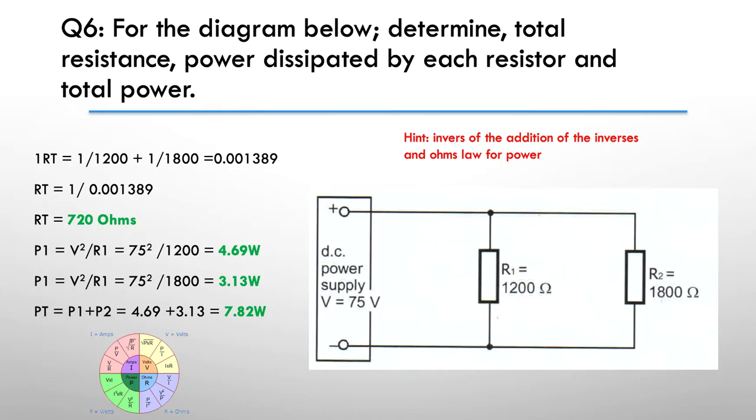And here's the answer. Again, our 1 on RT is equal to 1 on 1200 plus 1 on 1800. So that was the two values of the resistor that we've got here. So that's where these have come from, our 1200 and our 1800. We've added up the inverses which gave us this, and when we inverted it back, we got 720 ohms. So the effective resistance of the circuit is the 720.